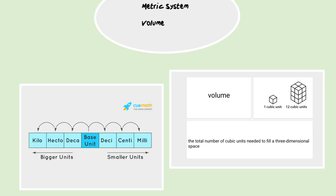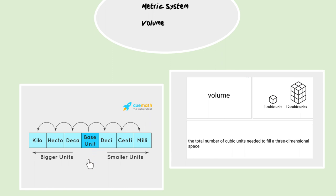For our second set of vocab, the metric system and volume: we don't need to know much about the metric system for the conversions we're doing today, but here's just a basic setup on how we do many conversions in the metric system. We'd put our base unit here, and to go smaller we'd move this way and our decimal point would move this way. To go bigger, we'd move this way, as would our decimal point.